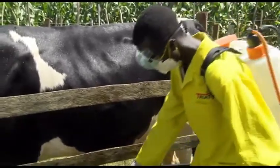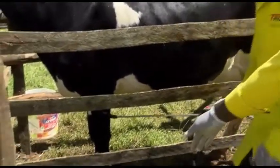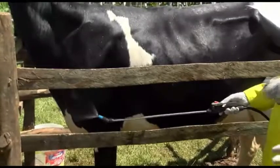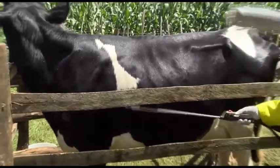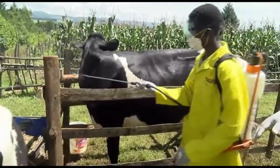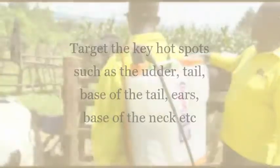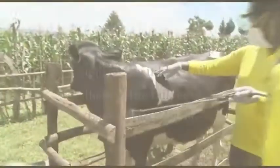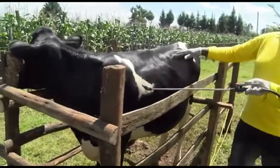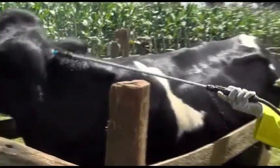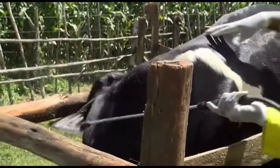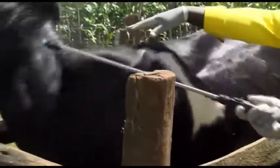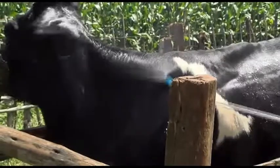Start from the four legs right from the bottom, coming upwards, then go to the head and to the neck, going forward. That is a very important part where ticks will hide, and then cover the other side of the animal as well.